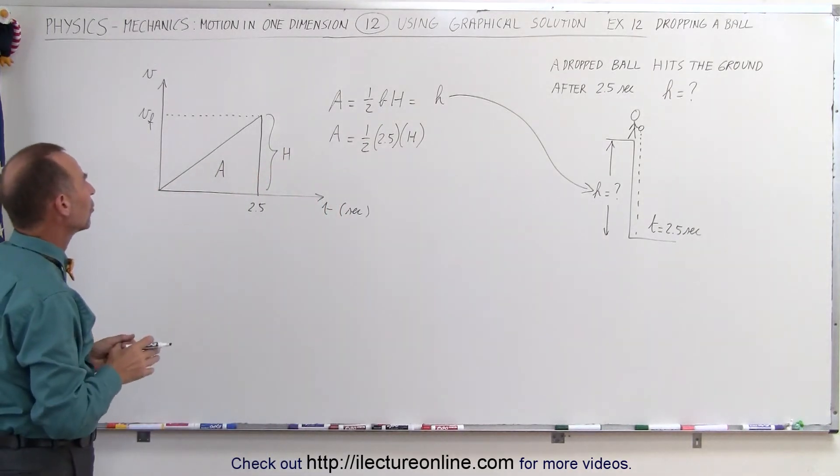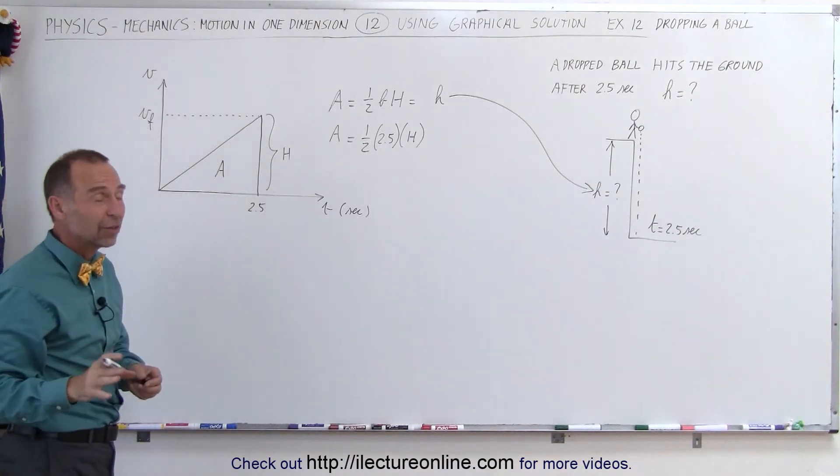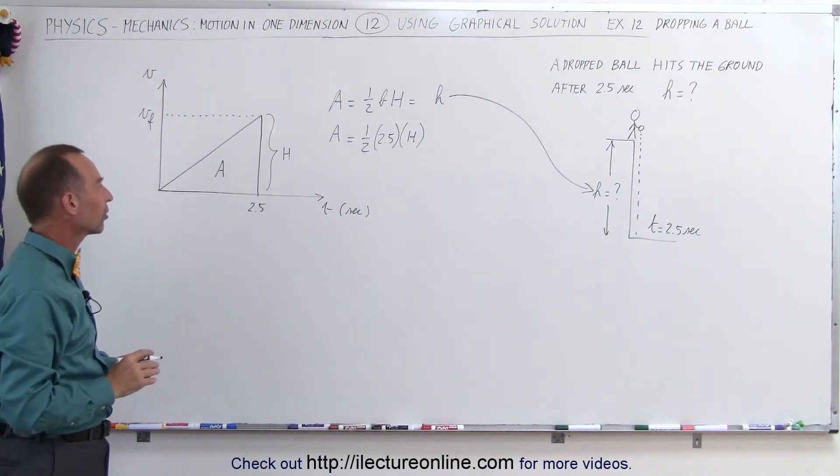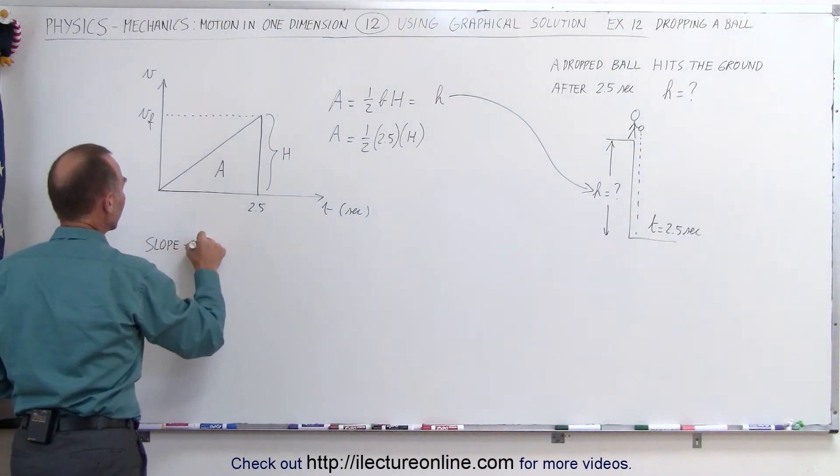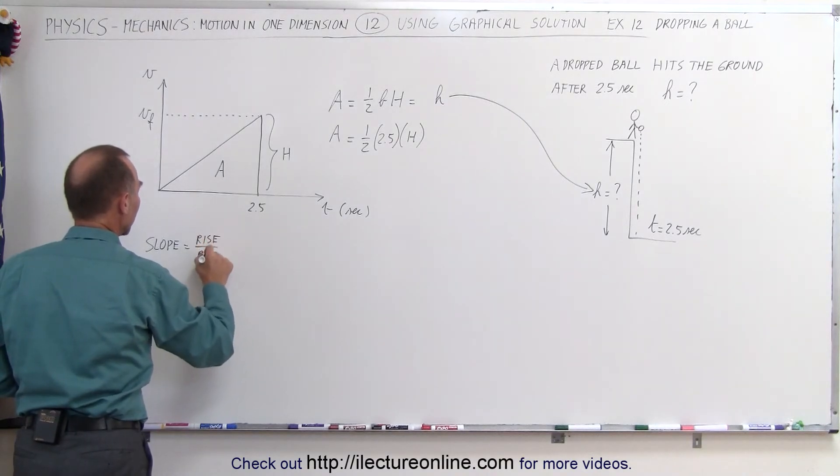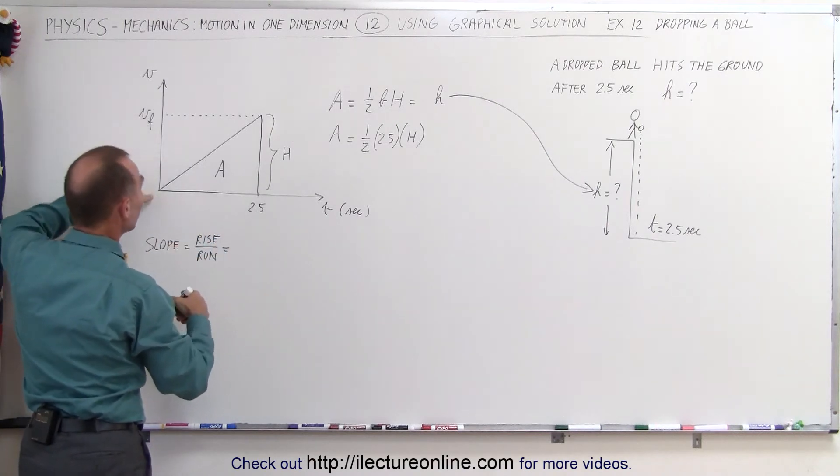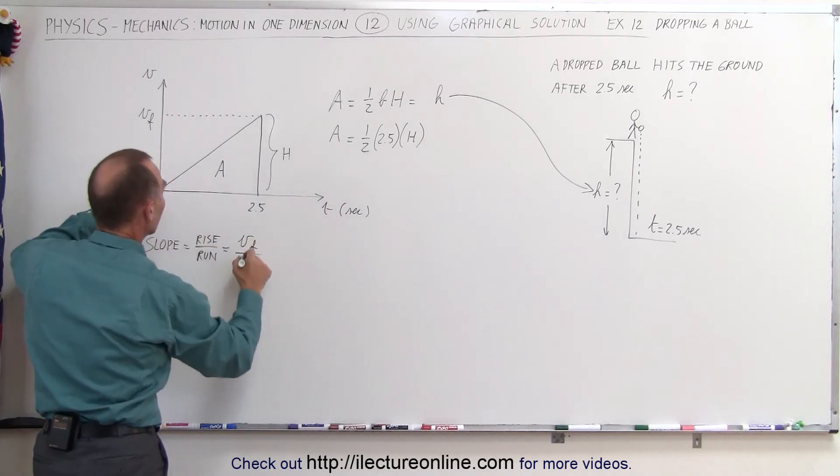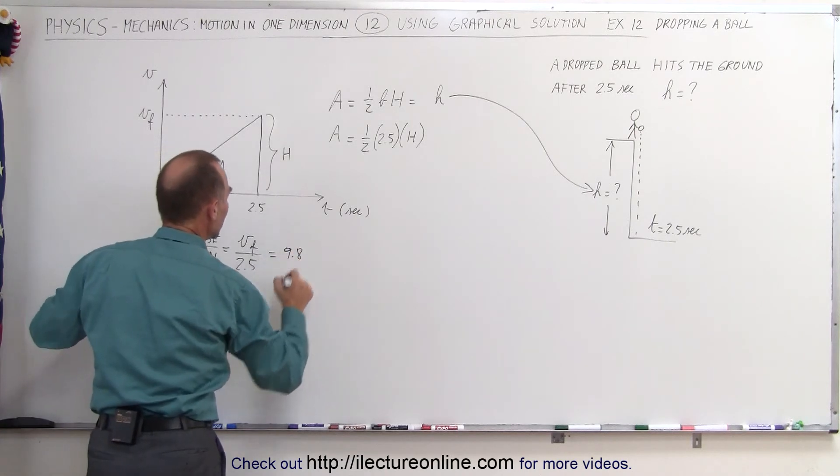So what we can do here is look at the second part of what this tells us. We know that the slope of this graph represents the acceleration. And since it's a dropped object, the acceleration should be 9.8 meters per second squared. So the slope, which is equal to the rise divided by the run, the rise would be the difference between the initial and the final velocity. Since the initial velocity is zero, the final velocity would be v final and the run would be 2.5 seconds. And we know that the slope has to equal 9.8 meters per second squared.